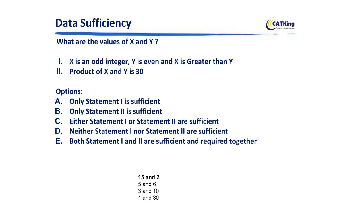The important aspect to keep in mind is that the answer options remain the same throughout all questions. Option A says only statement one is sufficient. Option B says only statement two is sufficient. Option C says either statement one or statement two is sufficient. Option D says neither of the statements is sufficient. And option E says both are required. These options are going to remain the same throughout all your questions.